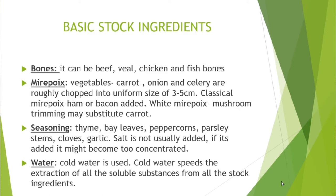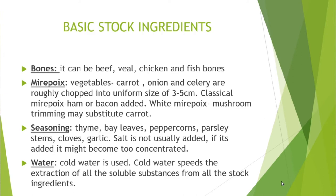The mirepoix consists of carrots, onion and celery, roughly chopped into uniform sizes of three to five centimetres. That is the traditional mirepoix. We also have the white mirepoix, where we substitute the carrots with mushrooms. There is also the classical mirepoix to which ham or bacon is added.